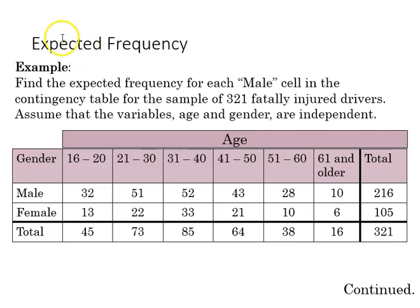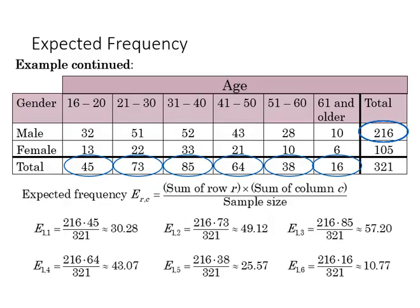Returning to our example, we're going to find the expected frequency for each cell from the intersection of gender and age. For each male cell in the contingency table, assume the variables age and gender are independent. Let's find the expected.